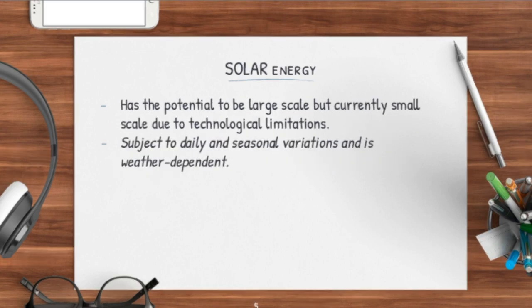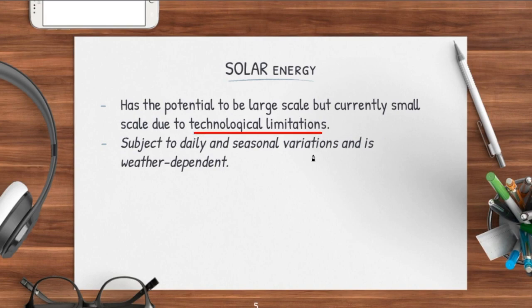The next one would be solar energy. Solar energy has a lot of potential and has got the potential to be large scale, but currently only on a very small scale because of technological limitations. Solar energy is actually very expensive, so in a lot of countries like LDCs, they cannot afford it. One more reason is that it's subject to daily and seasonal variations and is weather dependent. If you're in a tropical monsoon climate where it is always raining, chances are it's very hard to harness solar energy because there's always a lot of cloud cover, leaving little room for sunlight to produce solar energy.